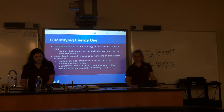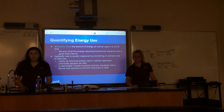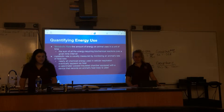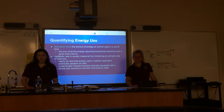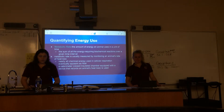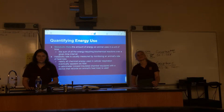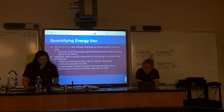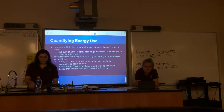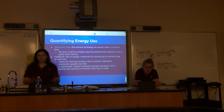Metabolic rate is the amount of energy an animal uses in a unit of time — the sum of all energy-requiring biochemical reactions over a given time interval. Metabolic rate is usually measured by monitoring an animal's rate of heat loss, since nearly all chemical energy used in cellular respiration eventually appears as heat. A calorimeter, a closed insulated chamber with a device that records heat loss, is used to measure metabolic rate.